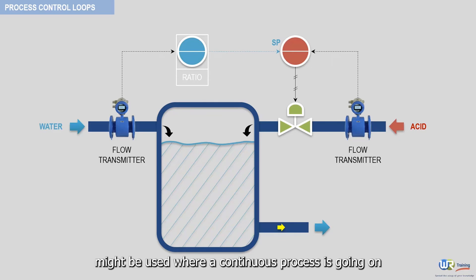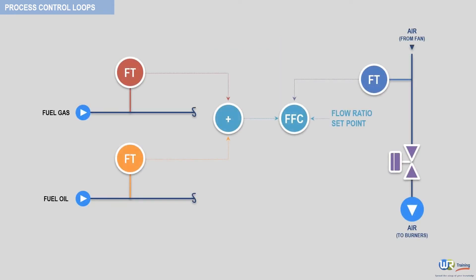Ratio control might be used where a continuous process is going on and an additive is being put into the flow. This second example illustrates a typical ratio control used for industrial furnaces.